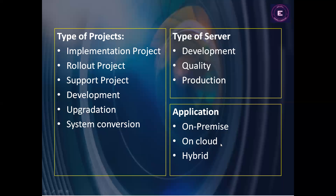On cloud costs are quite less and are subscription-based — monthly, quarterly, or yearly. The customer doesn't worry about server installation or hardware. Hybrid means a combination of both on cloud and on-premise — a two-in-one functionality. These are the application types available for any industry.